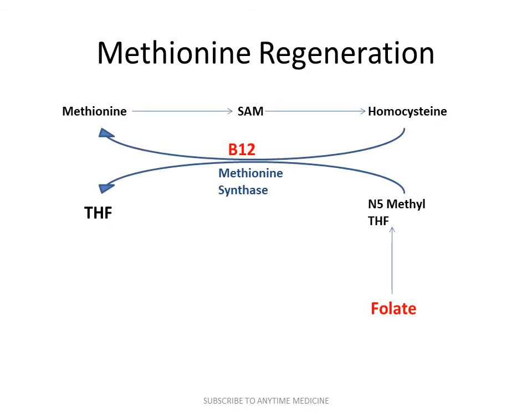As a summary of the big picture: methionine converts into SAM, SAM converts into homocysteine, and that homocysteine converts back into methionine with the help of methionine synthase and vitamin B12. In this process, N5-methyl-tetrahydrofolate converts into tetrahydrofolate, and that N5-methyl-tetrahydrofolate comes from folate. So vitamin B12 and folate are very important for this process. If we are deficient in either one, we cannot make thymidine.